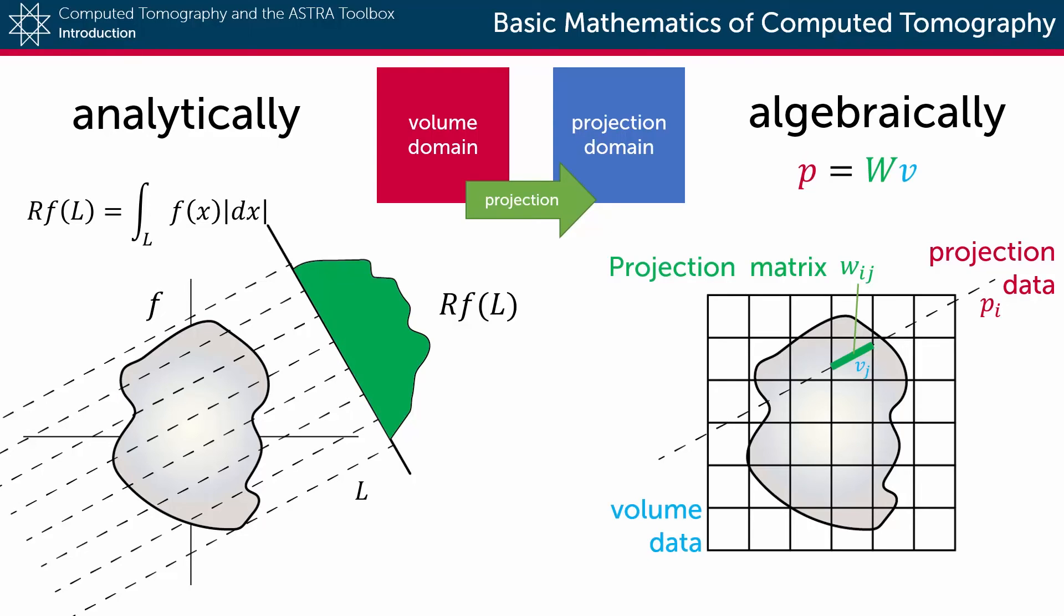Each value in this matrix, called a projection weight, defines the contribution of a specific pixel to a specific detector. The exact method of how these volumes can be computed is the topic for another video.